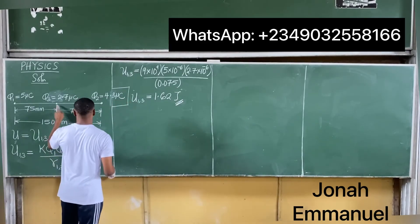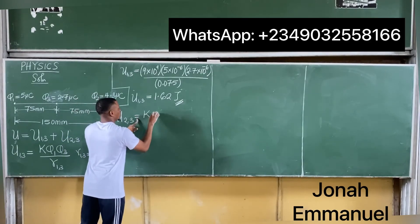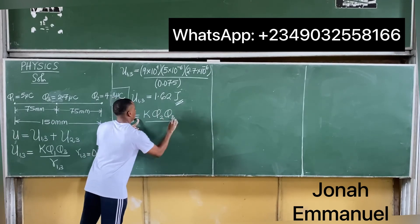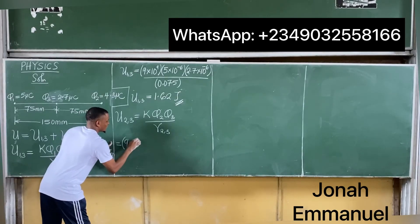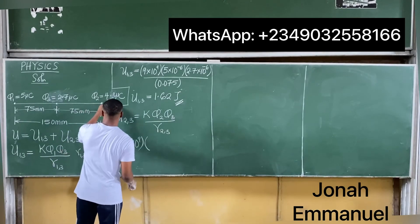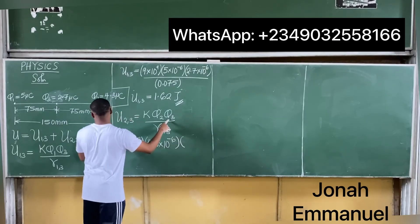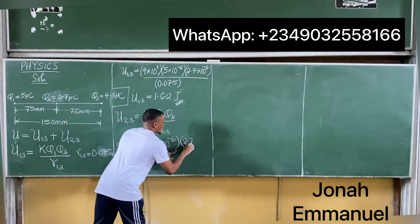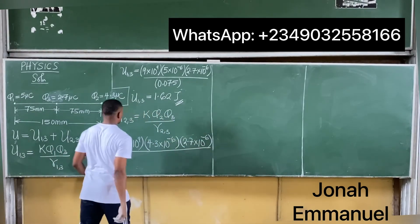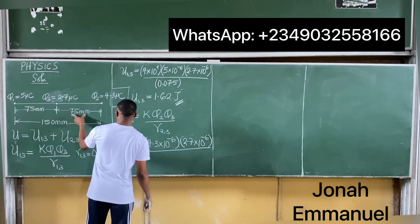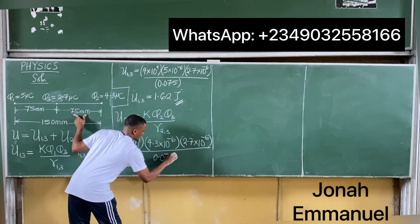Now U23 = kq2q3/r23 = (9 × 10⁹ × 4.3 × 10⁻⁶ × 2.7 × 10⁻⁶) / 0.075, where r23 = 75 mm = 0.075 m.